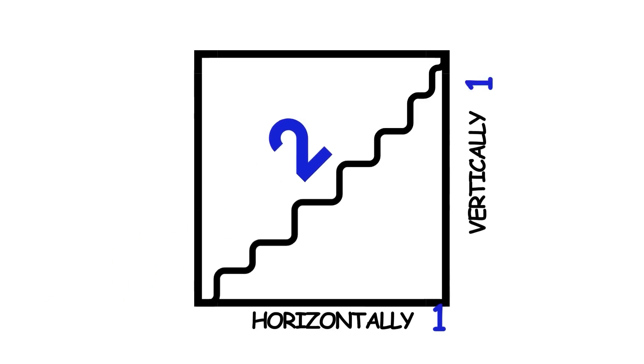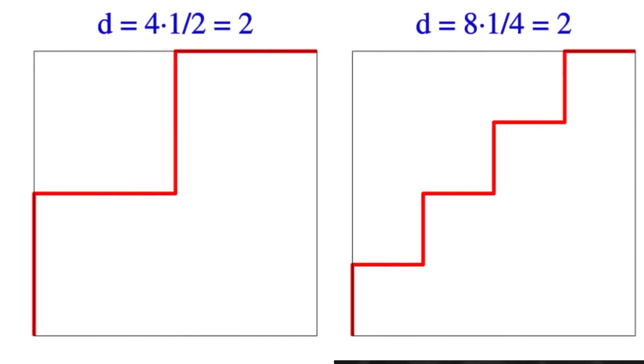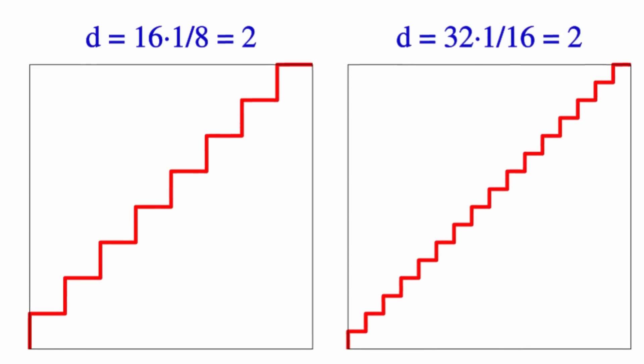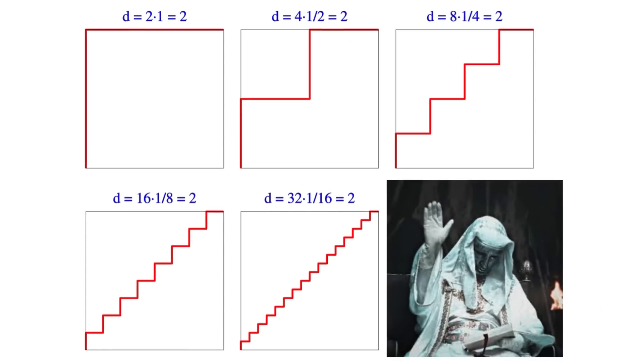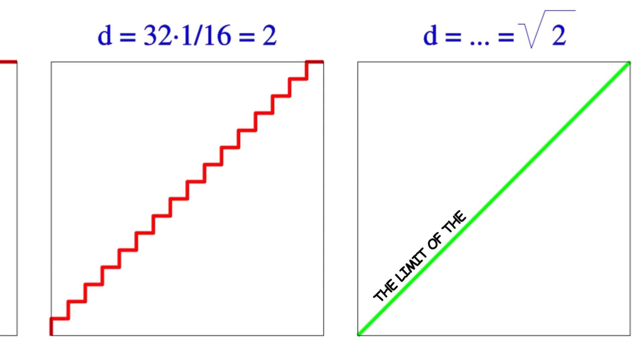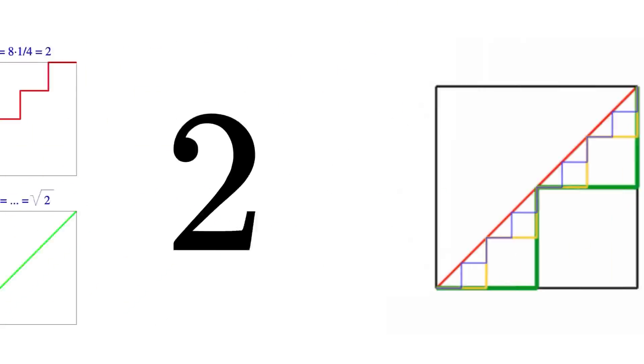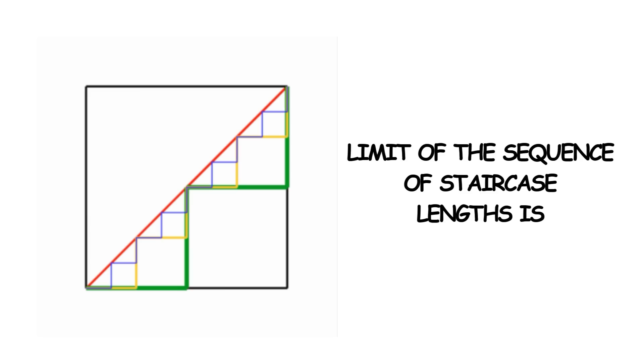the total length of the staircase is 2. If we draw staircases with smaller and smaller steps, each staircase is still 2 units long. Since the sequence of staircases gets arbitrarily close to the diagonal as you go further along the sequence, we say that the diagonal is the limit of the sequence of staircases. Similarly, since each staircase length in the sequence is 2,